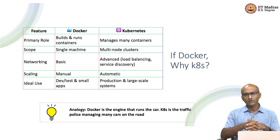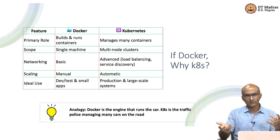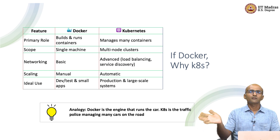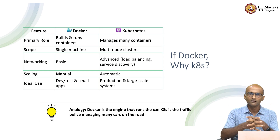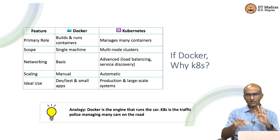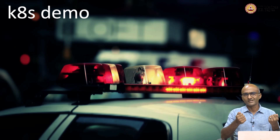The analogy you can use is: Docker is the engine that runs the car, whereas Kubernetes is the traffic controller that manages a bunch of cars operating on the same shared infrastructure — basically the highways or the roadways. That's how they are complementary to each other. With that, it's time for a Kubernetes demo.